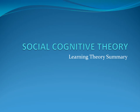The Social Cognitive Theory of Learning focuses on how people learn by observing others and how they eventually assume control over their own behavior over time. It also emphasizes that people and their environment mutually influence each other through reciprocal causation between the person, the environment, and the behavior. This definition is a summary of Chapter 10 of the Omrod text, Educational Psychology, Developing Learners.